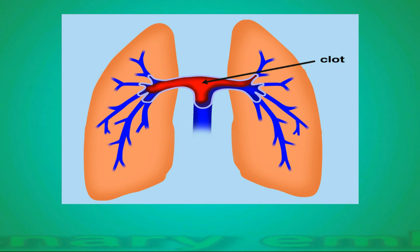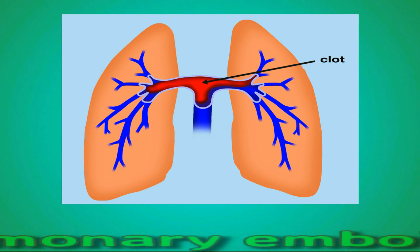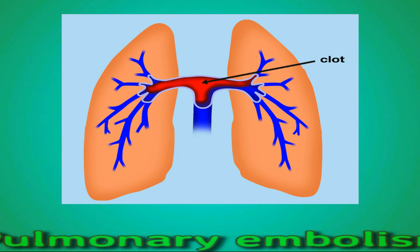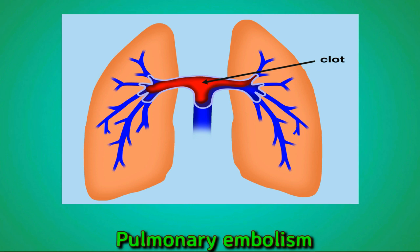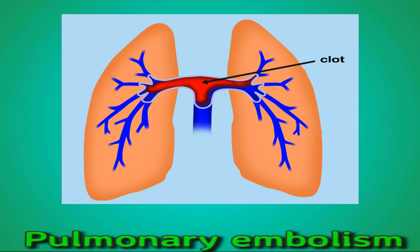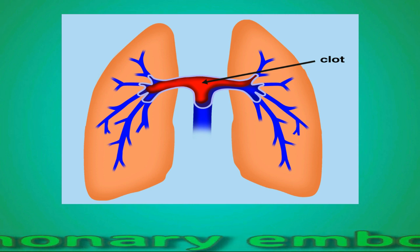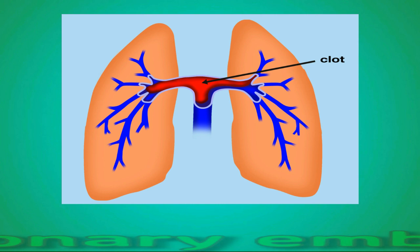A pulmonary embolism is a blood clot or clots in the arteries of the lungs. A pulmonary embolism can occur after a person has had surgery or been sedentary for some time.